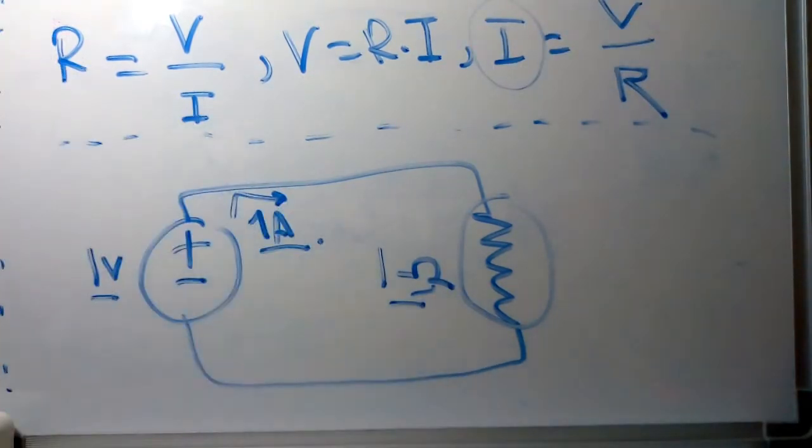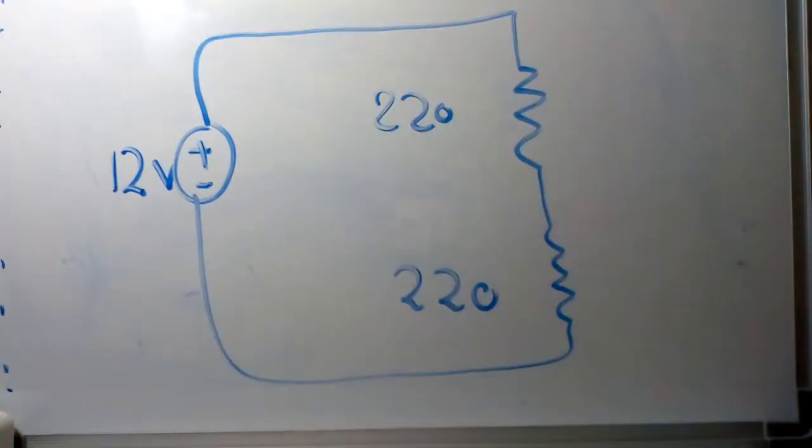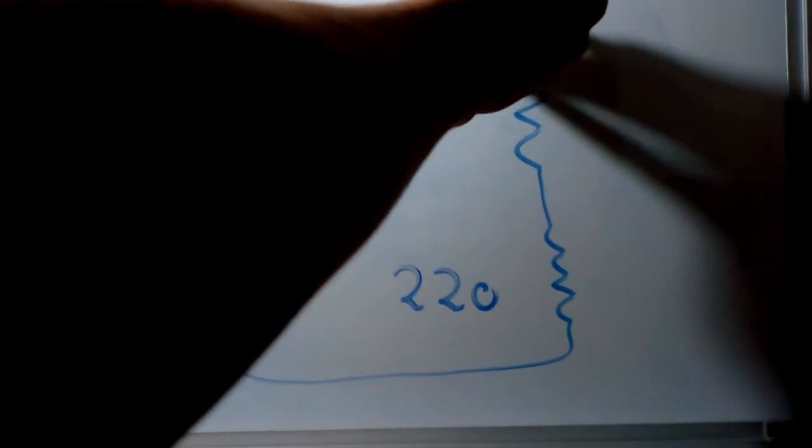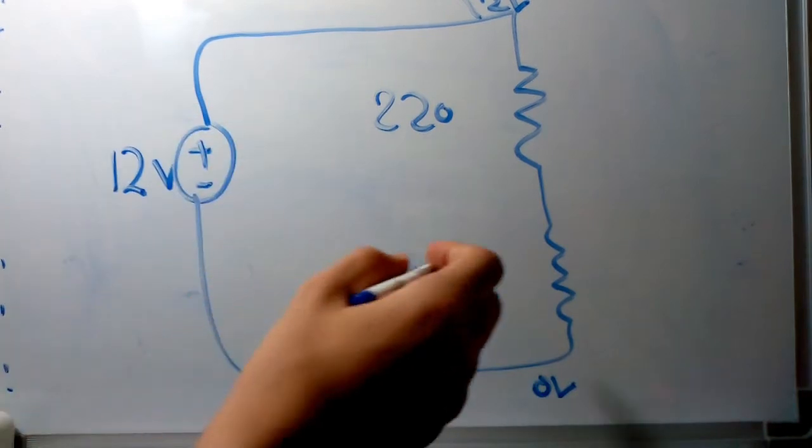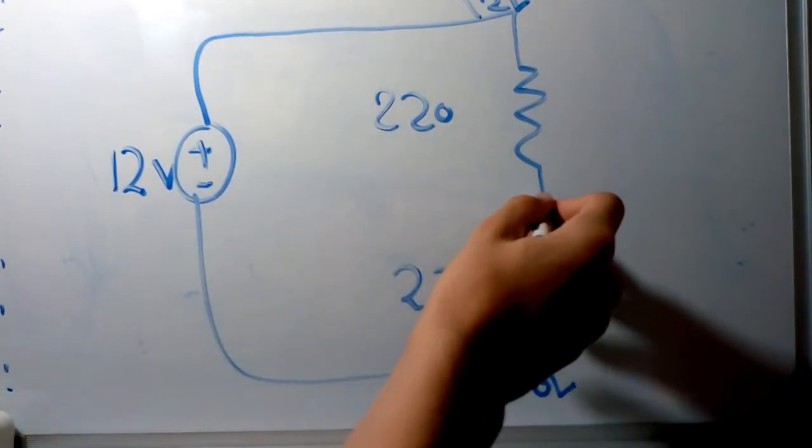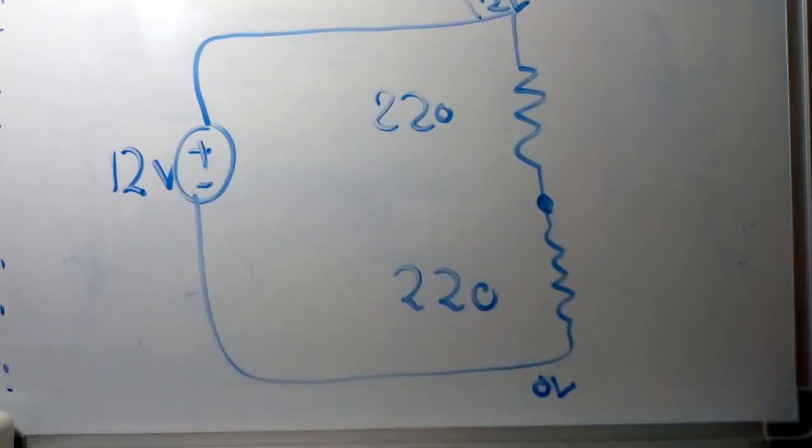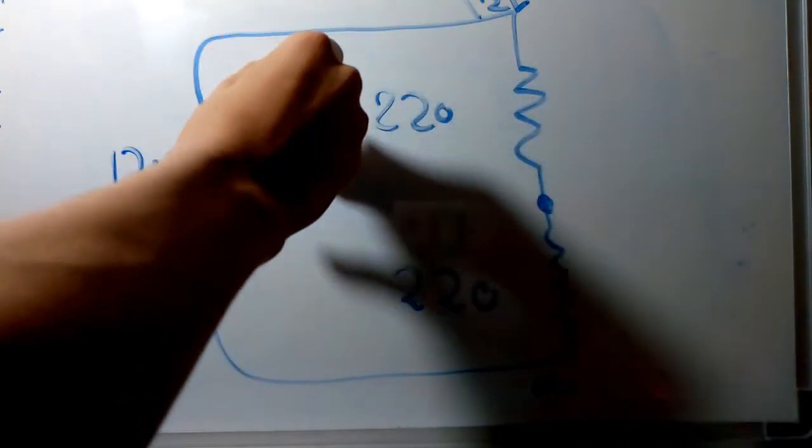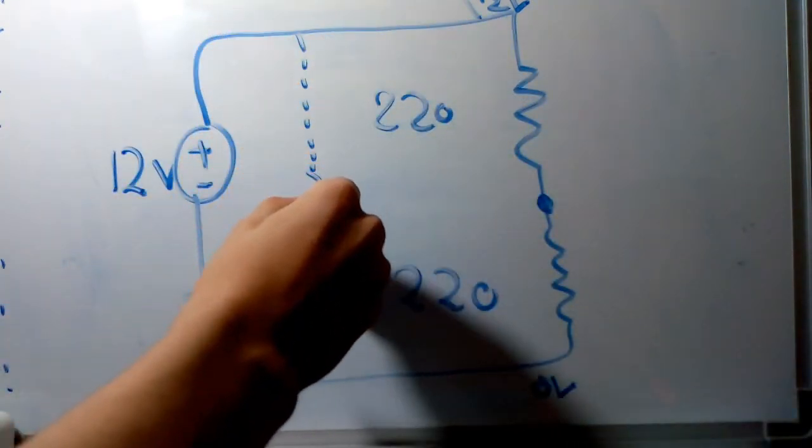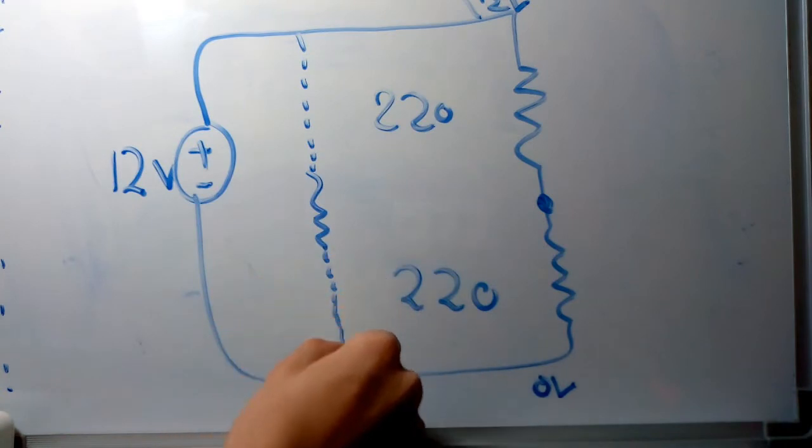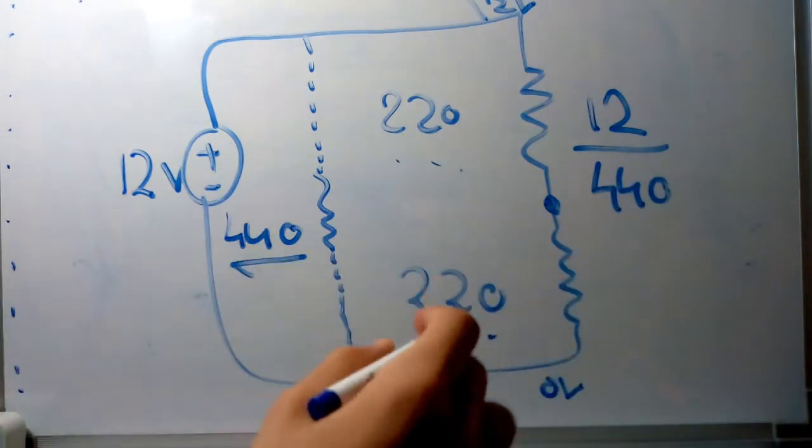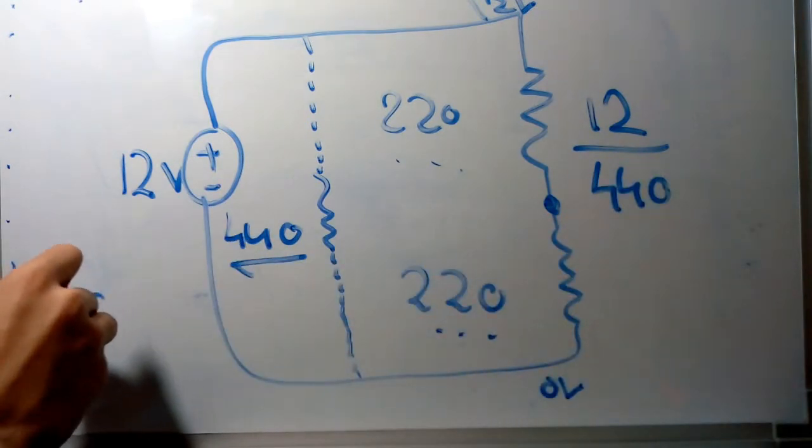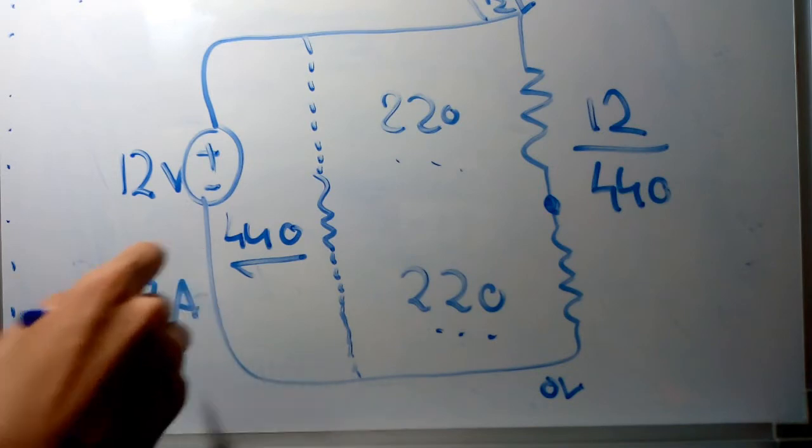Our circuit will have two resistors connected in series to divide the voltage. We have a 12 volt power source and two 220 ohm resistors in series. At this point we'll have the divided voltage. To calculate it, we imagine we have another resistor with the sum of two 220 ohm resistors, which is 440 ohms, and calculate the current drawn by these resistors, which equals 27 milliamps or 0.027 amps.